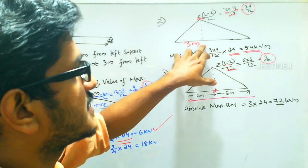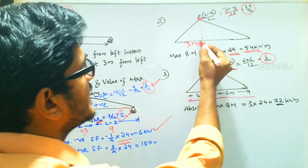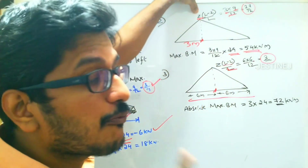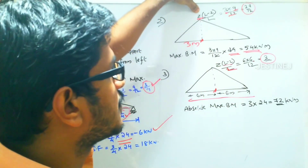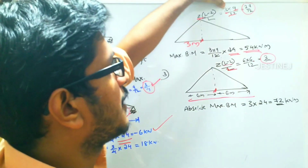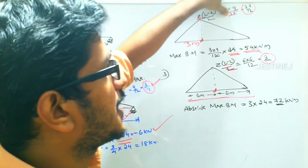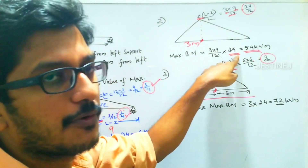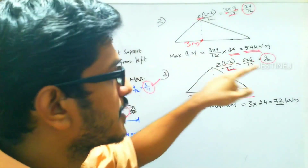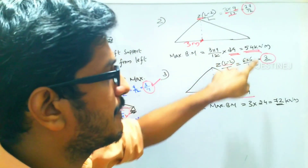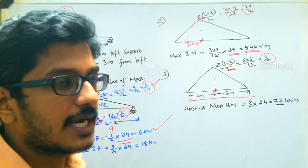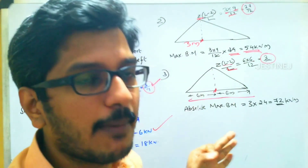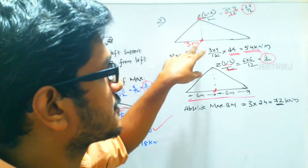For the maximum bending moment at the section 3 meter, using the general equation for one unit load, substituting the value gives 3 multiplied by 9 by 12. Then multiplying by 24, the given load value, we finally get a maximum bending moment of 54 kilo Newton meter at the 3 meter section.